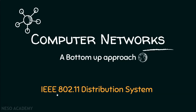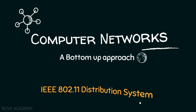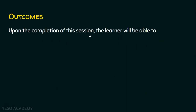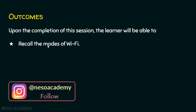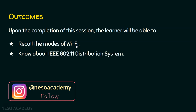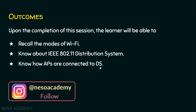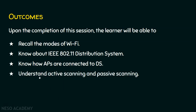In today's lecture, we will see the IEEE 802.11 distribution system. We will start the session with the outcomes. Upon completion of this session, the learner will be able to: Outcome 1 - Recall the modes of Wi-Fi. Outcome 2 - Know about the IEEE 802.11 distribution system. Outcome 3 - Know how access points are connected to distribution systems. And the last outcome - understand what is active scanning and passive scanning.